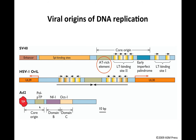Secondly, these origins have repeated sequences that bind origin binding proteins. Here in the SV40 origin, you have repeated yellow regions shown with arrows to indicate their directionality — these are where the T antigen is binding. When you have multimers of a protein binding, you repeat the sequence to which it is bound, which is why there are multiple copies of these protein binding sites in the origins.